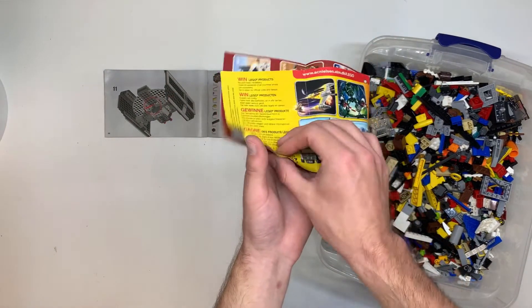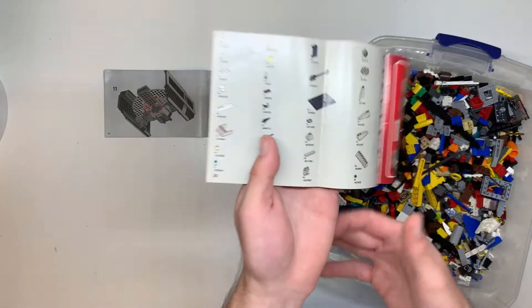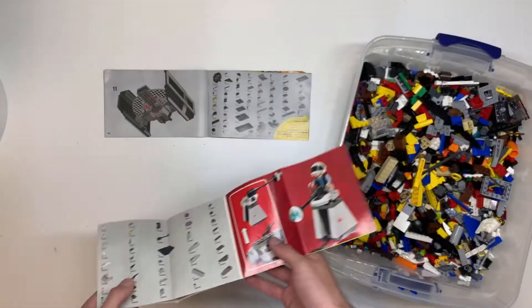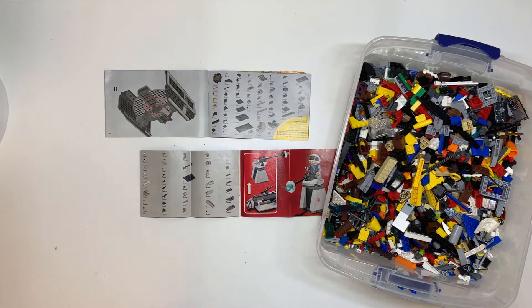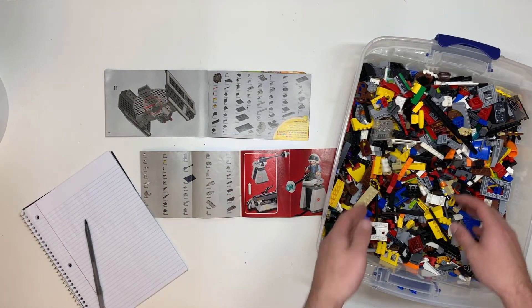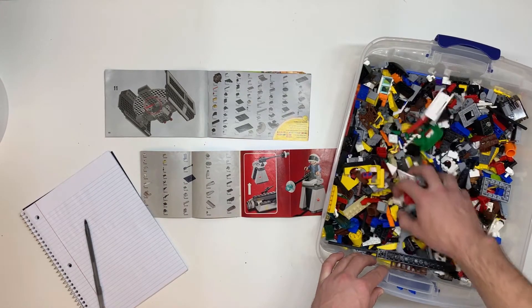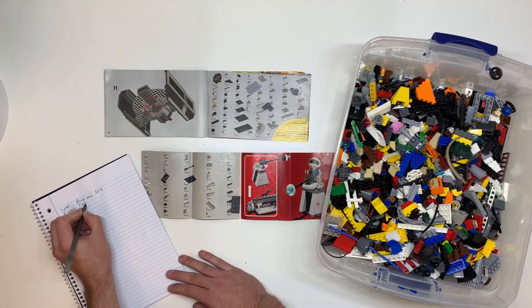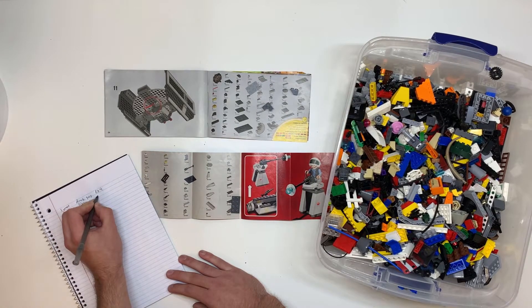Open the LEGO directions to the back where the LEGO pieces for the set can be found. Go piece by piece and try to match the pieces from the bin to the pieces listed on the directions, somehow keeping track of the number of pieces as well, maybe with a piece of paper.